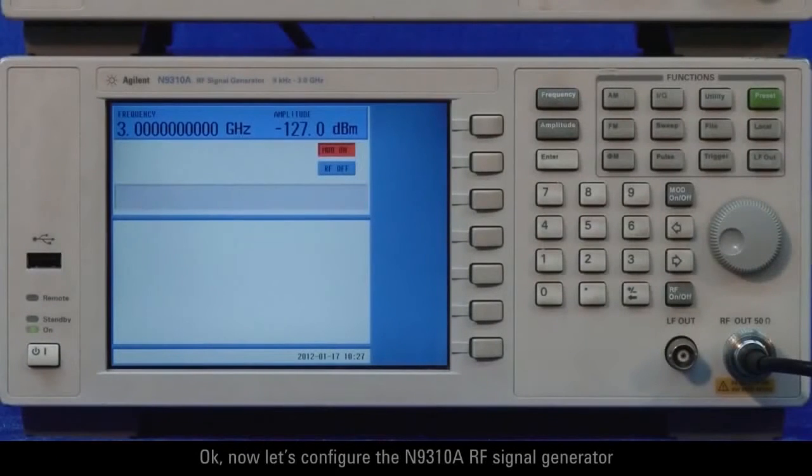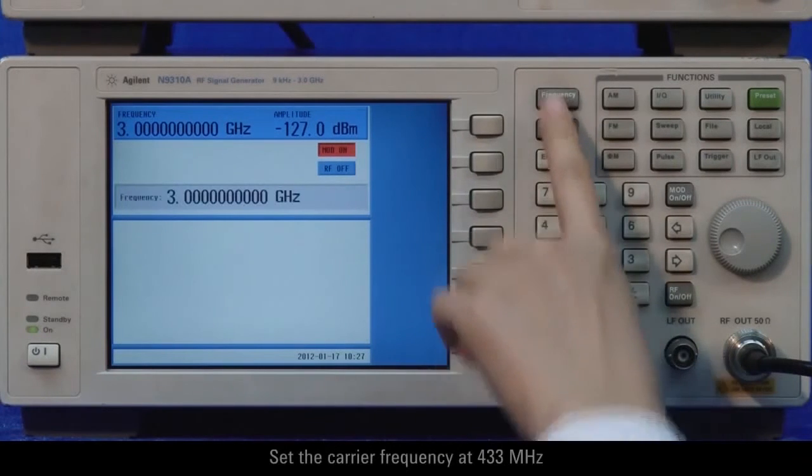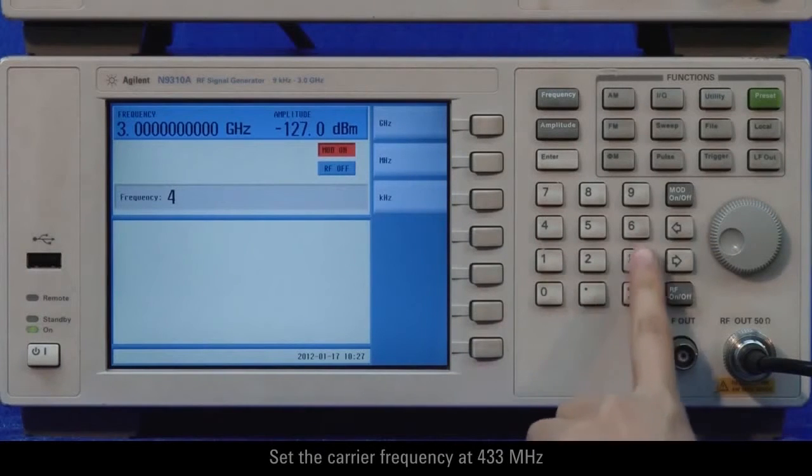OK, now let's configure the N9310A RF signal generator for the 433 megahertz FSK modulated signal. Set the carrier frequency at 433 megahertz.